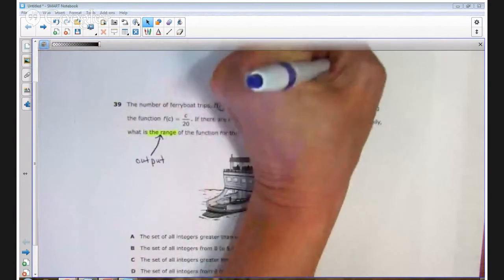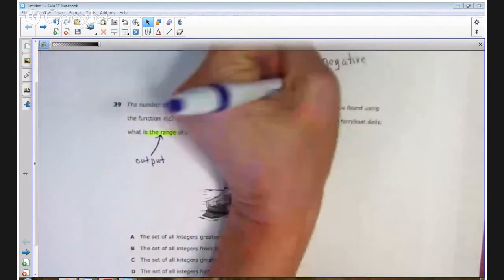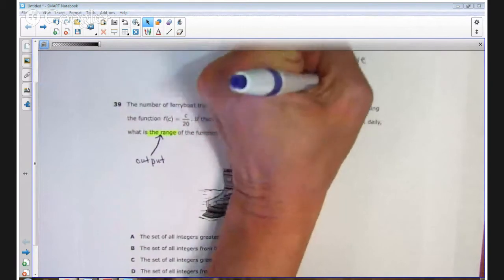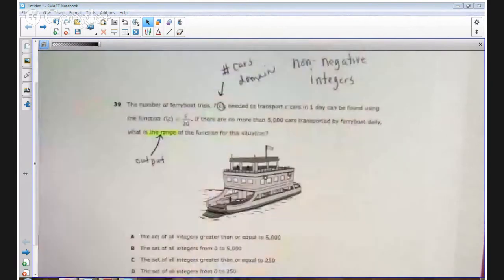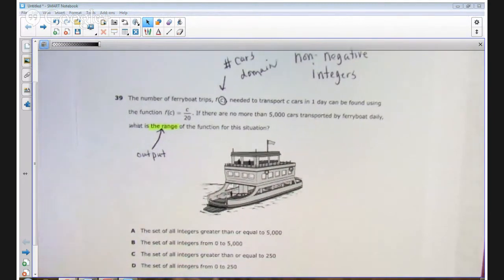Because you couldn't have a negative number of cars, it's also represented by integers, meaning it can't be a fraction or a decimal, but like a whole car. It could be zero cars, one car, two cars, and so on. If you look at each of the answer choices, each one says integers. So that really doesn't help us narrow down the solution.